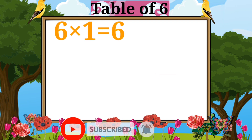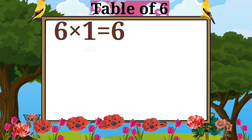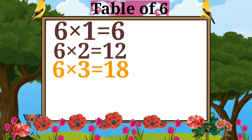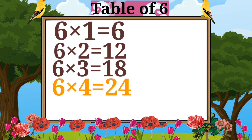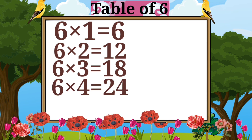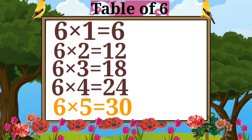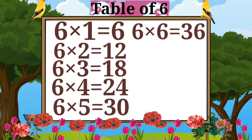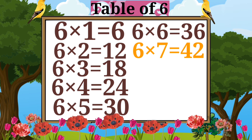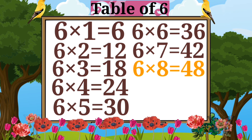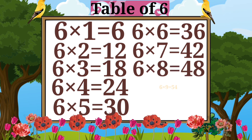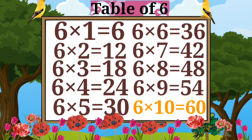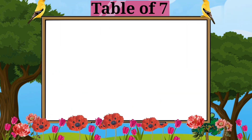Six ones are six. Six twos are twelve. Six threes are eighteen. Six fours are twenty-four. Six fives are thirty. Six sixes are thirty-six. Six sevens are forty-two. Six eights are forty-eight. Six nines are fifty-four. Six tens are sixty.